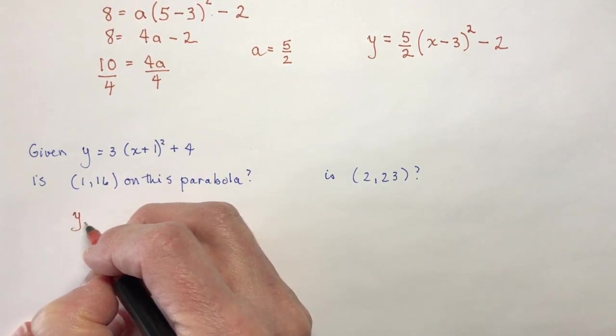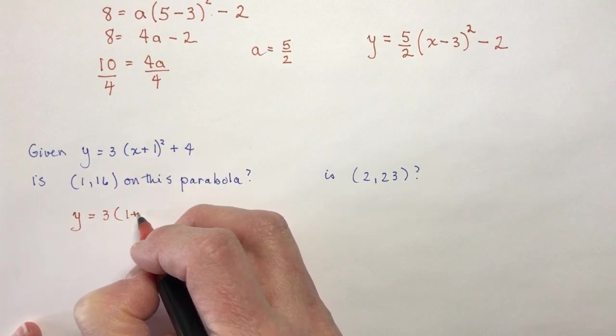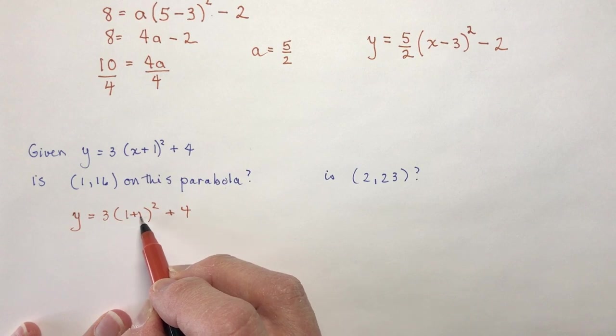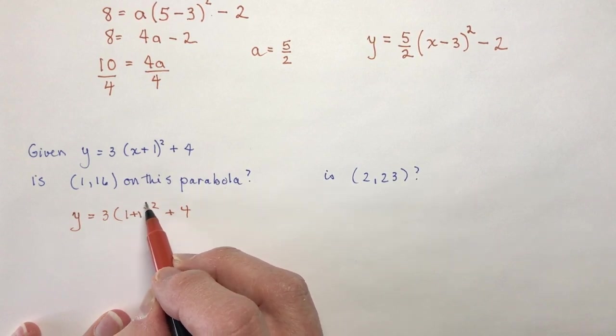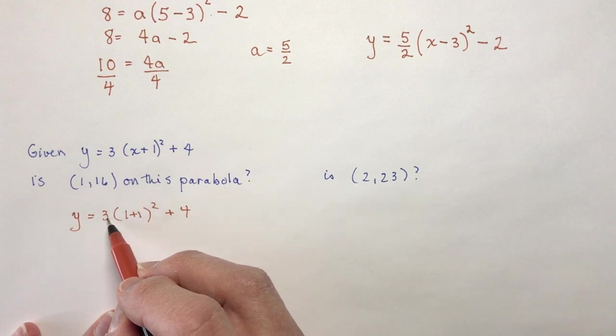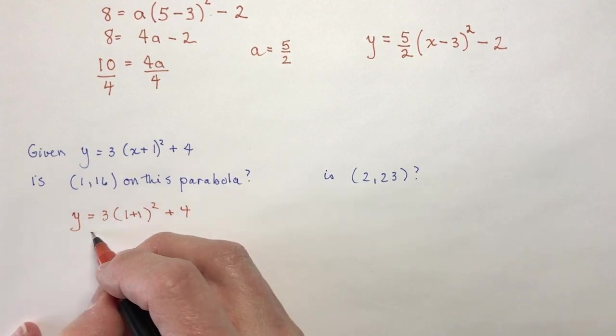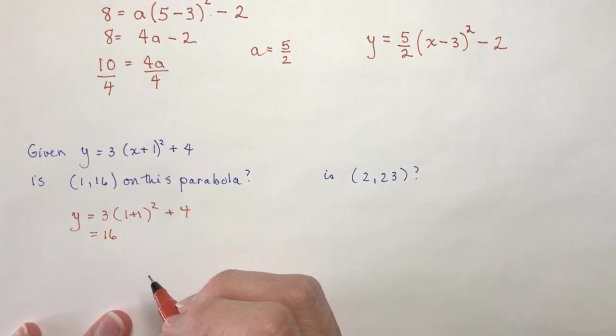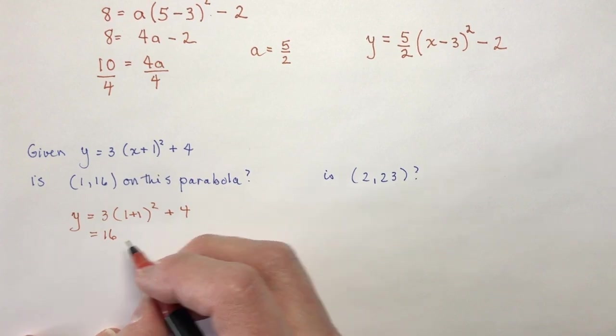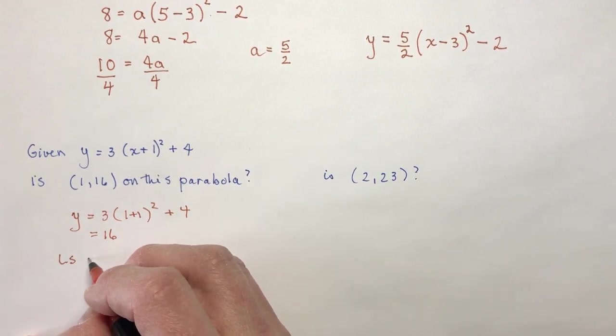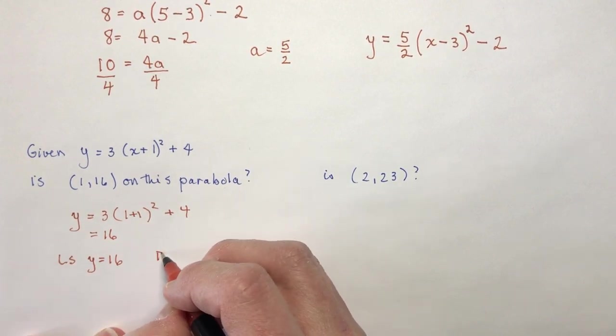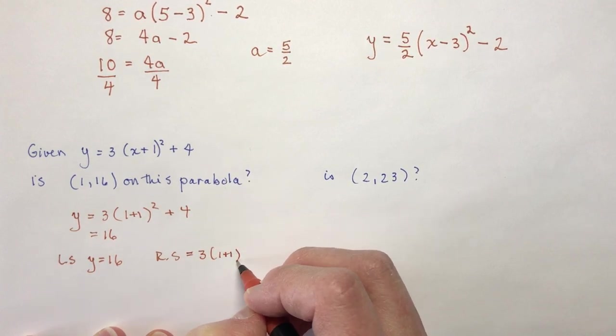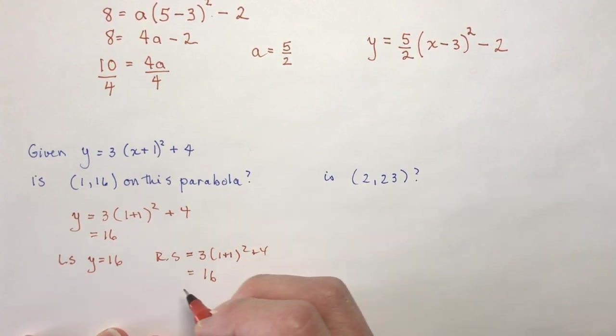So I'm going to say y is equal to 3 times (1 plus 1) squared plus 4. Order of operations. Add first. Do what's in the brackets first. That's 2. You square is 4 times 3 is 12 plus 4 is 16. So your teacher may ask you to do something like left side, right side. So you would say left side, y equals 16, right side, and then you would plug in this stuff. So 3(1 plus 1) squared plus 4, and you get 16 equals 16.